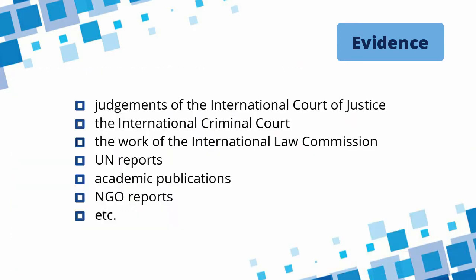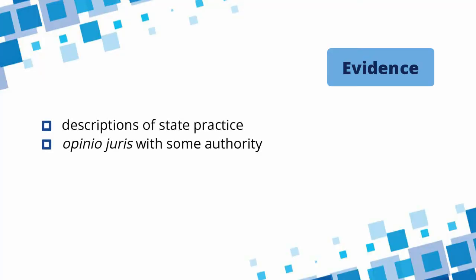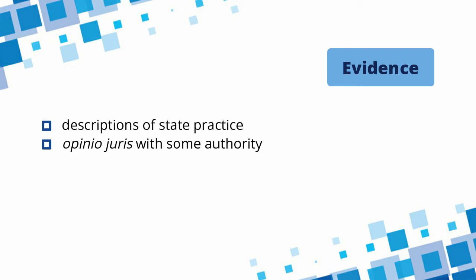You can also look at the work of the International Law Commission — think of the ILC's articles on state responsibility — United Nations reports such as the Brundtland Commission's report on sustainable development, academic publications, and NGO reports. When it comes to custom, finding support for a customary norm specifically, you might refer to descriptions of state practice and opinio juris that have some authority. Many governments keep a digest of state practice of their country, and you can also look at government memos.